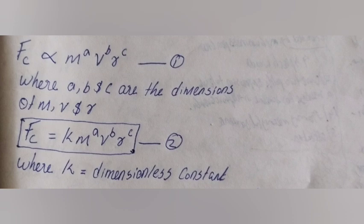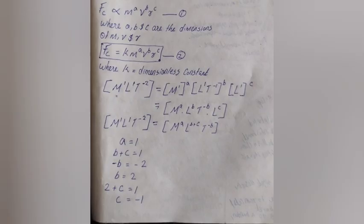Where a, b, and c are unknown powers. So F_c = k · m^a · v^b · r^c, where k is a dimensionless constant. Adding dimensions on both sides: M¹L¹T⁻² = M^a · L^(b+c) · T^(-b).